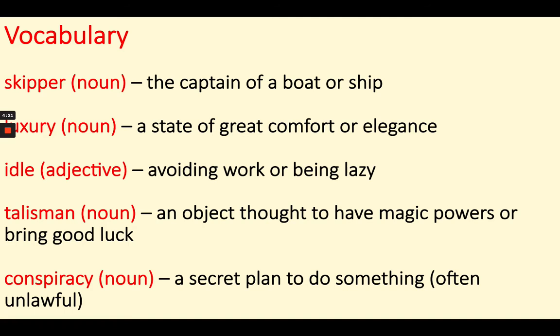Our fourth word today is talisman. A talisman is an object thought to have magic powers or to bring good luck. We'll learn about an object today that Michael thinks of as a talisman. And our final word today is conspiracy. A conspiracy is a secret plan to do something — usually something unlawful. But in our story today, Michael's talking about a conspiracy that he thinks his parents have created against him. I wonder what it will be!